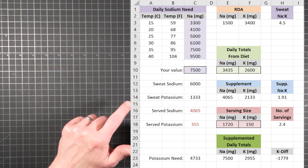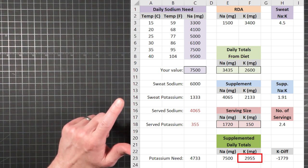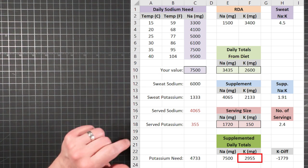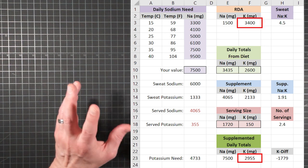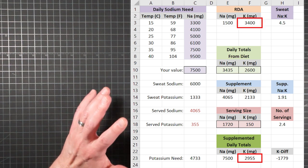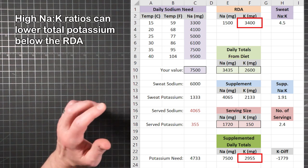The NAC ratio is quite high though, at over 11 to 1, and that means relative to the sodium there is less potassium per serving. And keeping an eye on the calculator, that leaves the supplemented daily total for potassium at 2955 milligrams, which is somewhat below the 3400 milligram daily allowance listed.